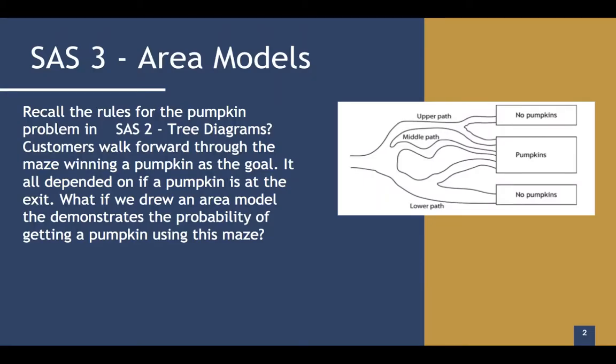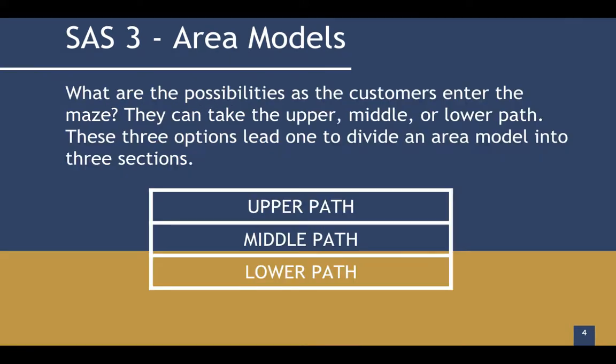Recall the rules for the pumpkin problem in SAS 2 for tree diagrams. Customers walk forward through the maze winning a pumpkin as the goal. It all depended on if a pumpkin is at the exit. What if we drew an area model that demonstrates the probability of getting a pumpkin using this maze?